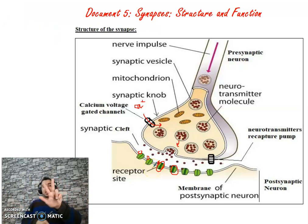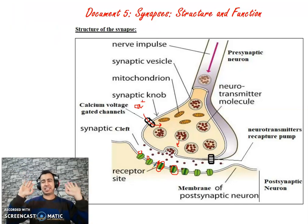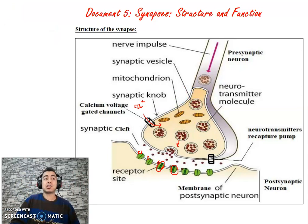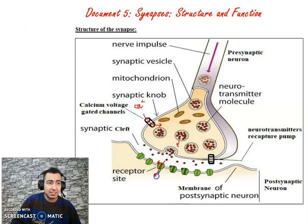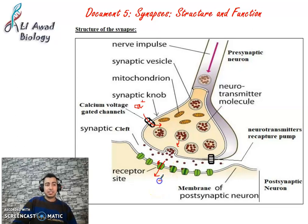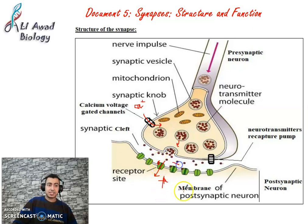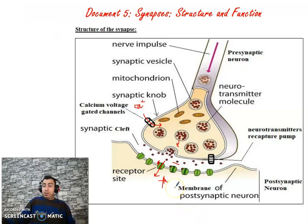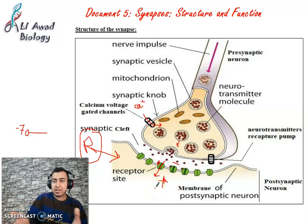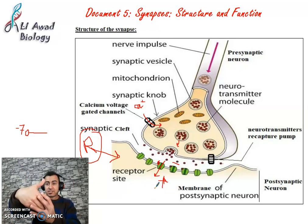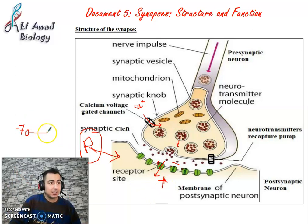We have three types of channels at the level of the post-synaptic neuron. If these channels are Na+ channels, they open and Na+ enters from the extracellular medium to the intracellular medium, making the intracellular medium positive and the extracellular medium negative. This is called depolarization. We know that the resting potential difference is minus 70 mV. When Na+ channels open, depolarization starts.